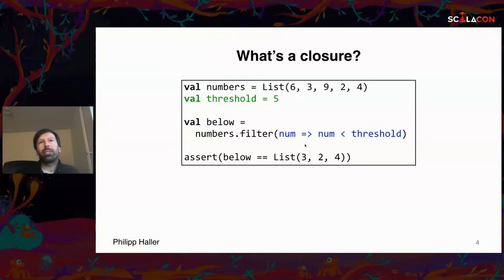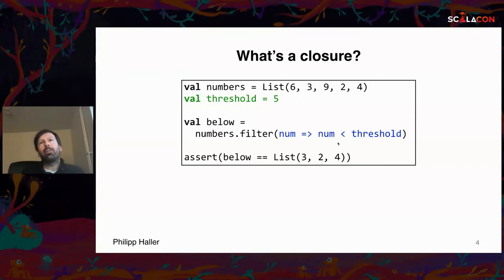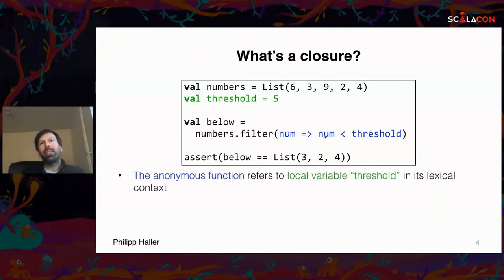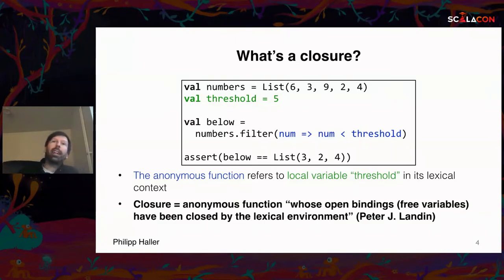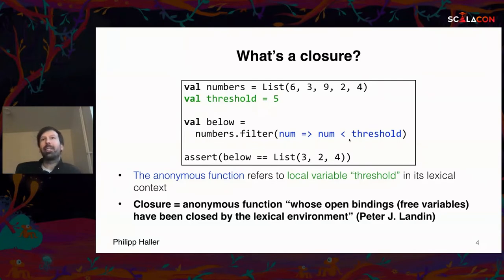We use the filter combinator to filter out all numbers less than the given threshold, resulting in the expected list. In blue we see an anonymous function — a function literal — with one parameter that refers to the threshold variable defined in the enclosing scope, also called the lexical context. A closure is an anonymous function whose open bindings have been closed by the lexical environment.